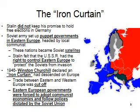Stalin established these puppet satellite states because he felt that a buffer zone was needed between Western Europe — Britain, France, and Italy in particular — and the Soviet Union, to prevent a capitalist democratic invasion. By 1946, it was a pretty complicated state of affairs in Europe. Only a year or so after the end of the Second World War, Winston Churchill — now the former Prime Minister of Great Britain — declared that an Iron Curtain had descended across Europe. What Churchill meant was that the European continent had been divided into two halves: capitalist democratic Western Europe and communist Eastern Europe.